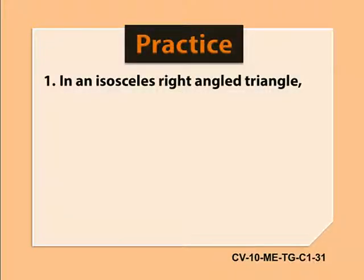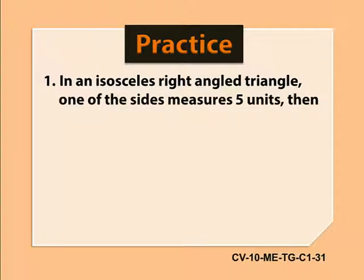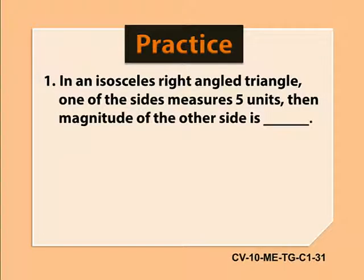Here are some questions for you to practice. Question 1. In an isosceles right angle triangle, if one of the sides measure 5 units, then magnitude of the other side is blank.